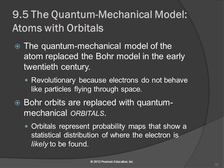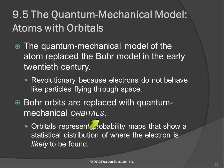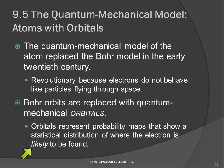So instead of orbits, which are nice to visualize, we have quantum mechanical orbitals. There's just this little 'al' added — orbit, orbital. It's a little like an orbit, but it isn't at all. An orbital represents a probability map — a statistical distribution of where the electron is likely to be found.